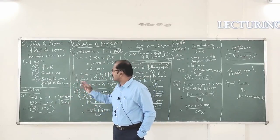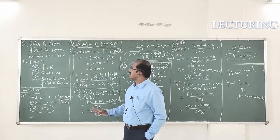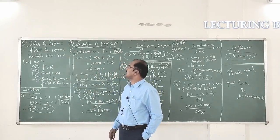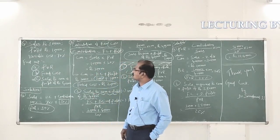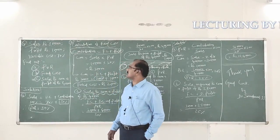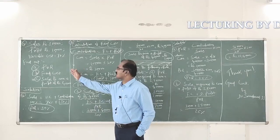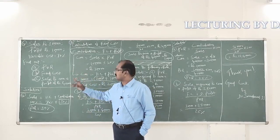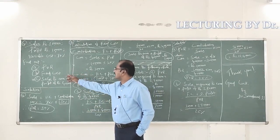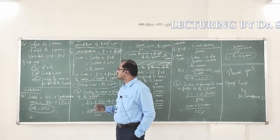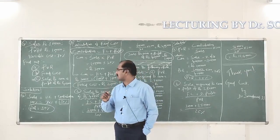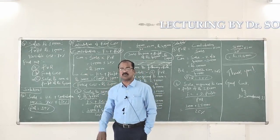In the first problem, we are given details like sales equal to 1 lakh rupees, profit equal to 10,000 rupees, and variable cost equal to 70% of sales. We are asked to find out: A) PVR, B) fixed costs, and C) sales to earn a desired profit of 40,000 rupees.